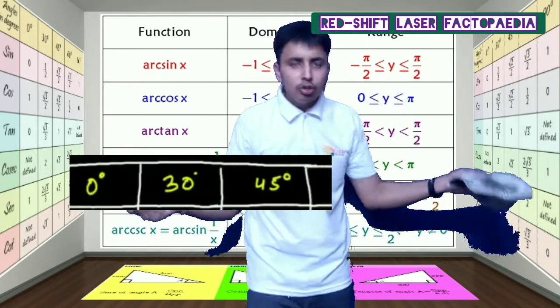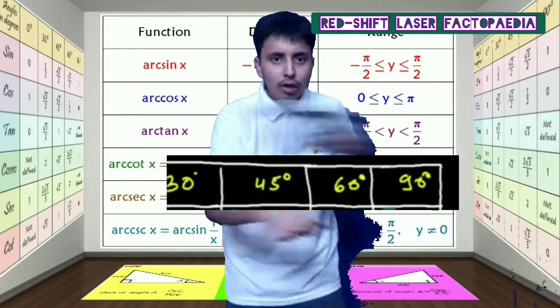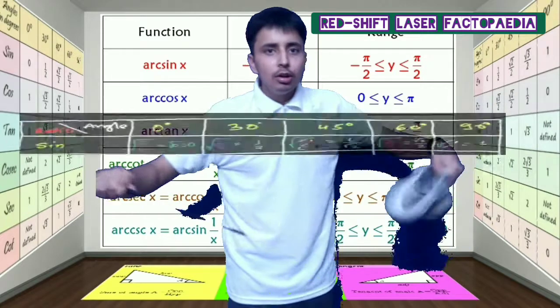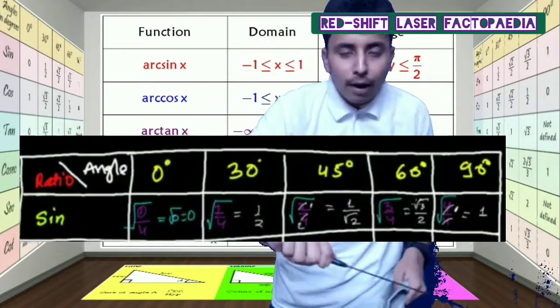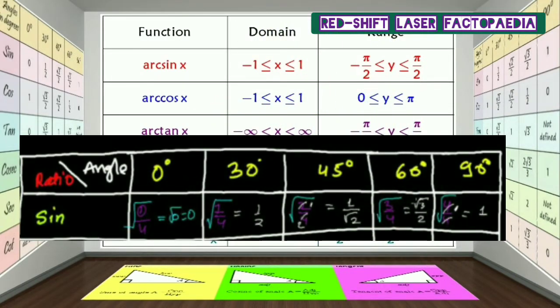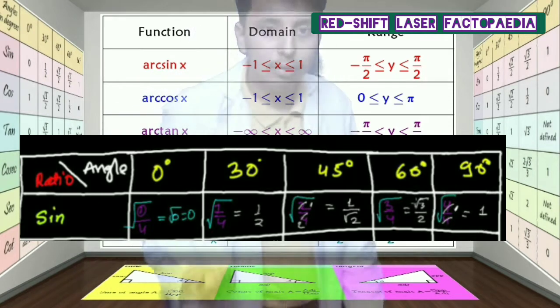Zero degree, thirty degree, 45, 60, 90 degree. Zero by four, one by four, two by four, three by four, four by four. All that you do, just as you understand.